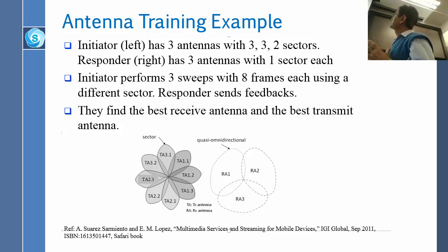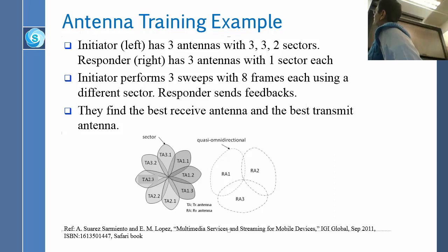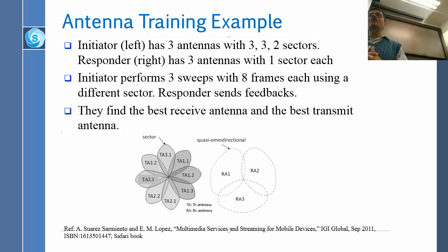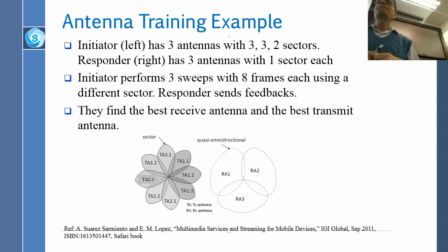The responder on the right has three antennas with one sector each. The initiator performs three sweeps with eight frames each, using a different sector. The eight frames cover three plus three plus two sectors — eight frames — and it does this three times: once talking to RA1, once to RA2, once to RA3. All possible combinations have been tried. After these 24 combinations, we will know which is the best direction. This one will know it should use antenna 1, sector 2, and the other will know antenna 1, sector 1.